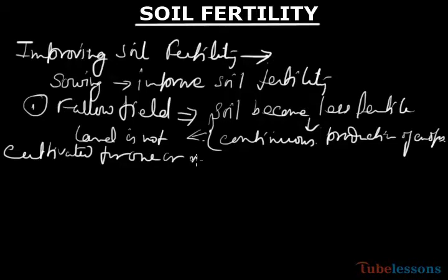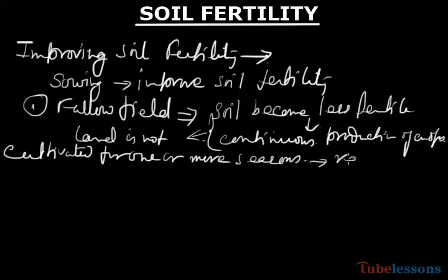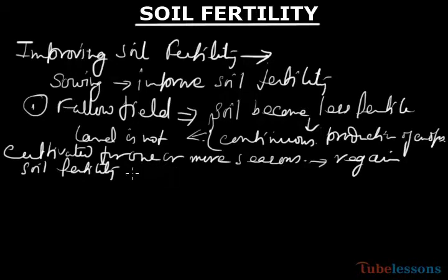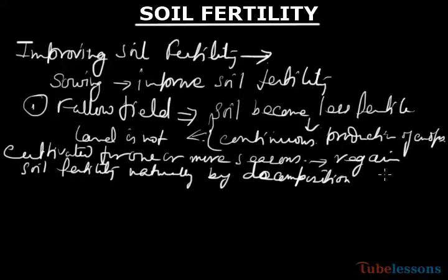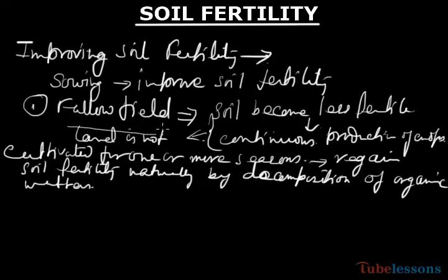Leaving the land uncultivated for one or more seasons helps it to regain its fertility naturally. It regains soil fertility naturally by decomposition of organic matter and organic plant material by microorganisms. This is the fallow field — to rest the field for one or more seasons to regain its fertility.